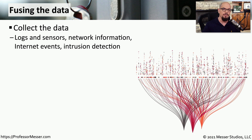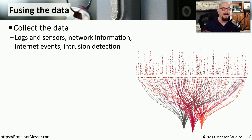Starting with raw data — we collect logs on almost all devices on our network, so we need that log data. We also need information about the network itself and where data is coming into and out of it. Events occurring elsewhere on the internet may help us understand when an attack might be incoming. Intrusion detection and other active monitoring tools provide metrics about what's happening right now.